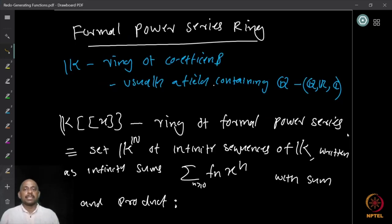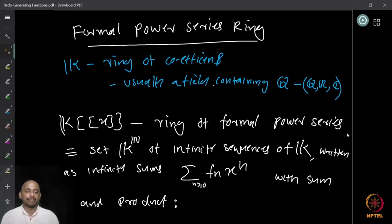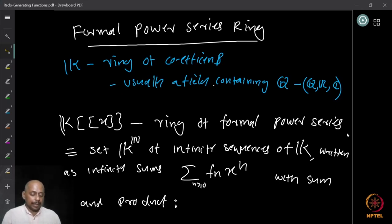The formal power series forms a ring — it has a ring structure. The field k from which we take the coefficients can be a ring of coefficients. We usually consider it to be a field because it gives nicer properties. For most purposes, we will assume that it contains ℚ, so we take ℚ, ℝ, or ℂ. When it does not contain ℚ, we have to be more careful — we will not go into detail. We denote by k[[x]] the ring of formal power series, because k[x] is used to denote the polynomial ring over k.